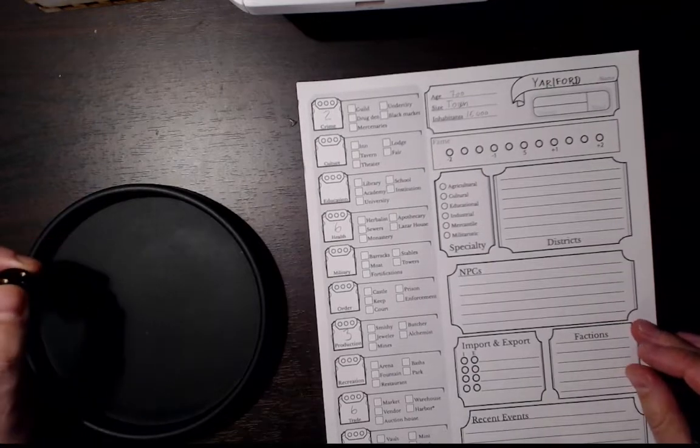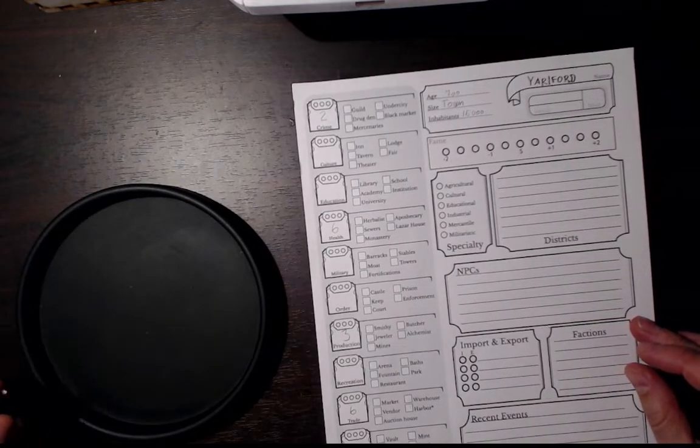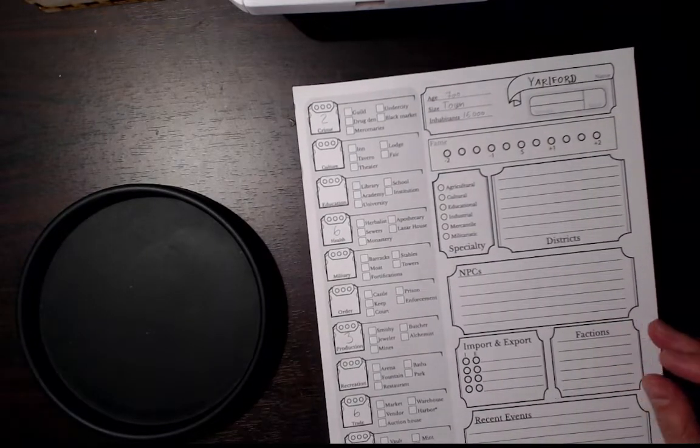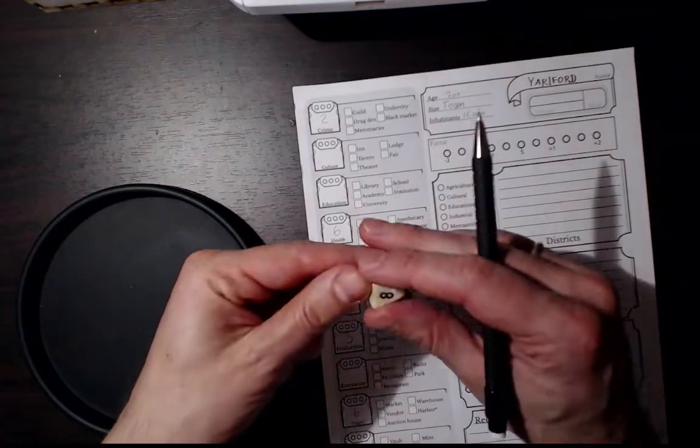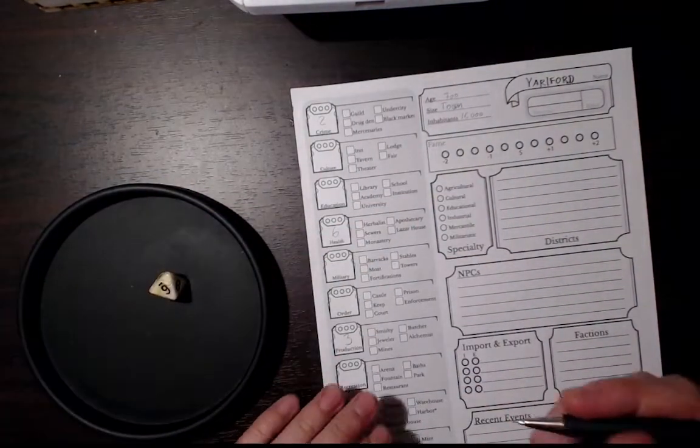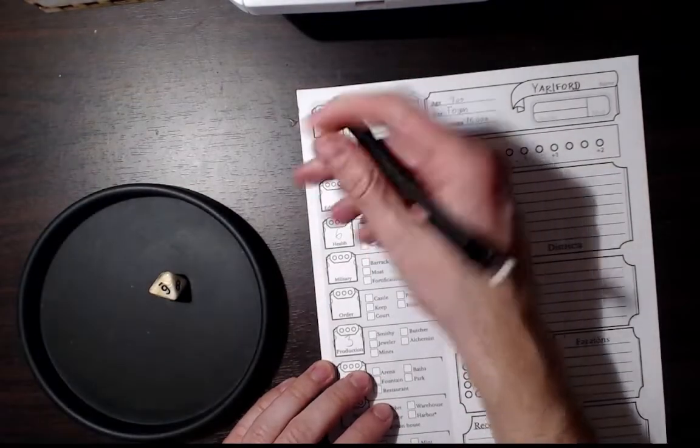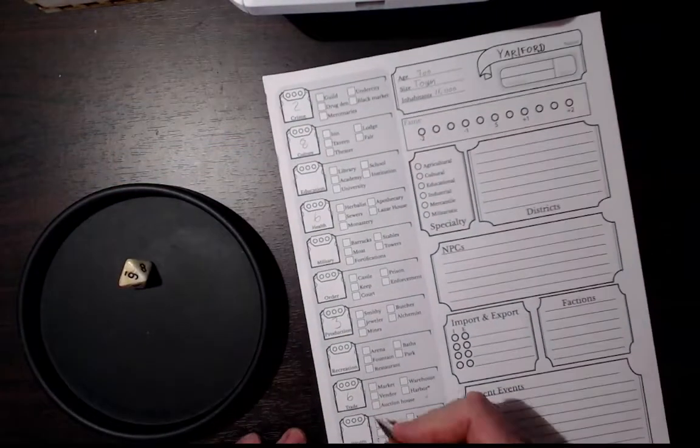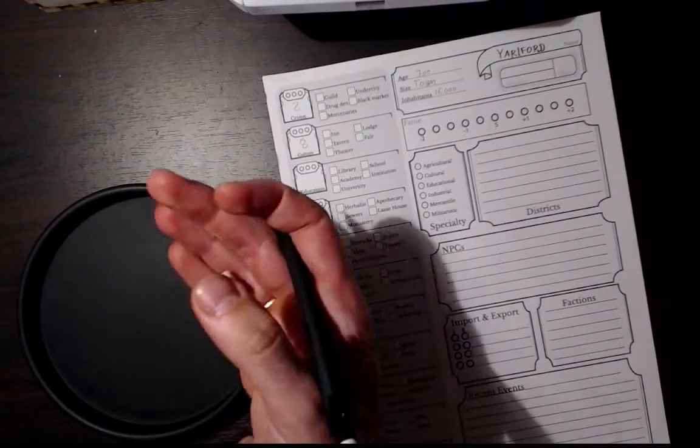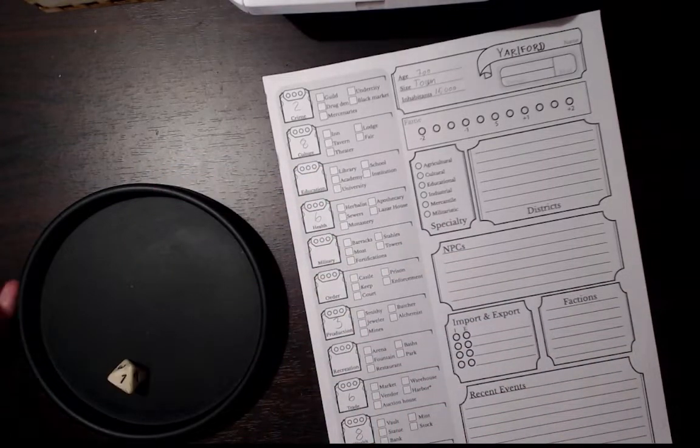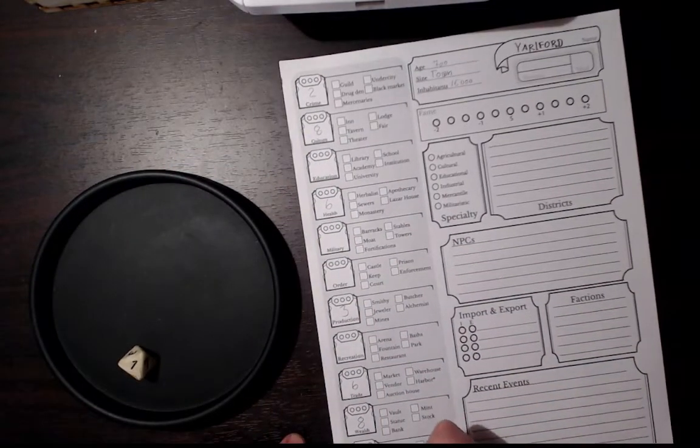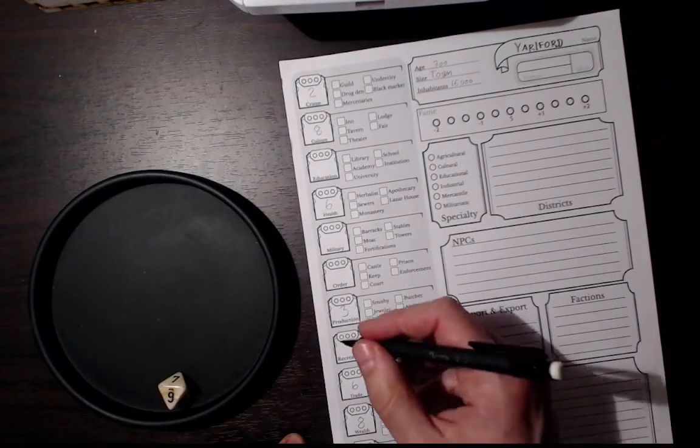Next die is a d8 plus two and we will have four of those. Let's see - eight, six plus two, that's eight for culture. Green worship - the last one is an eight.